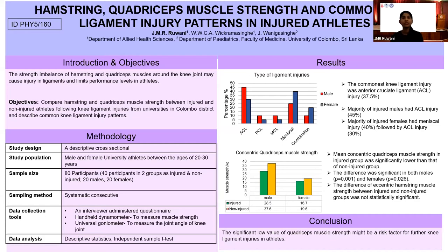The injured group were selected as athletes who had a ligament injury during the last six months and who had returned to normal sports activities without a proper rehabilitation process. A systematic consecutive sampling method was used. Data collection tools included an interviewer-administered questionnaire to collect data about injuries, a handheld dynamometer to measure muscle strength, and a universal goniometer to measure the joint angle of the knee joint. Data was analyzed using descriptive statistics and the independence t-test.